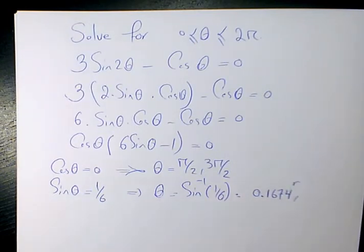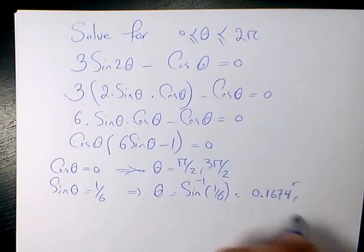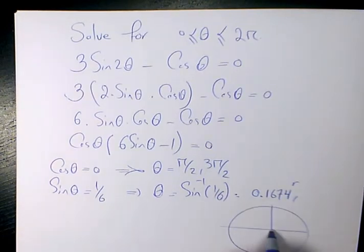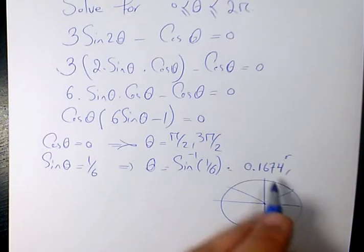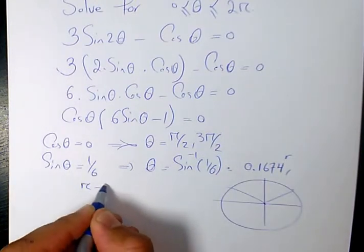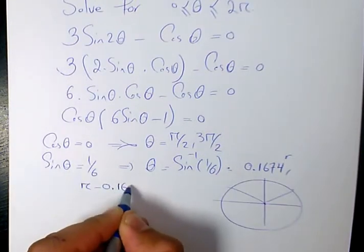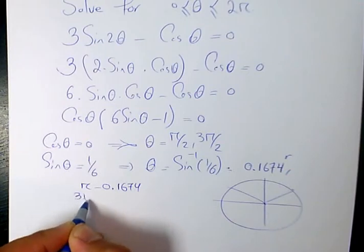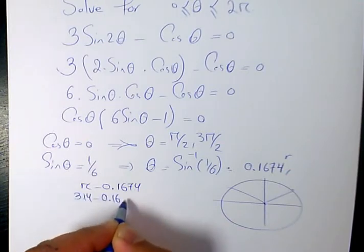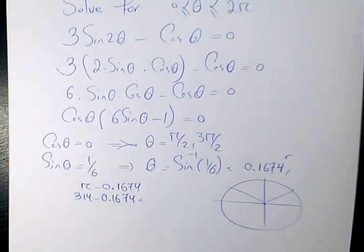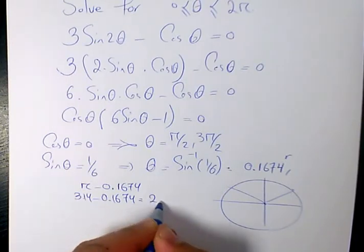And we know sine is positive in both quadrant 1 and quadrant 2. So the second answer is going to be pi minus 0.1674, which is 3.14 minus 0.1674, which equals 2.9726.